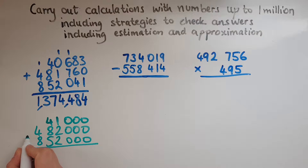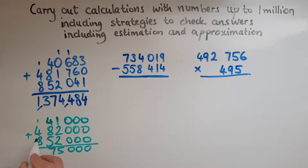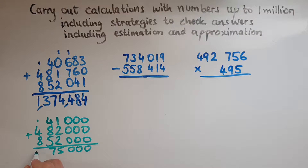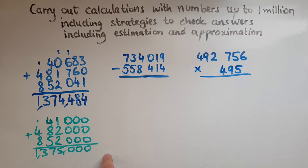If you need to recap estimation and approximation, have a look at the related videos. So adding these up now: 0, 0, 0, 0, then 5, 9, and 8 gives 17. So 7 and carry 1. Then 8, 9, and 4 gives 13. So this is 1,375,000, which is very close to the answer we had, suggesting that we've got it right the first time round.